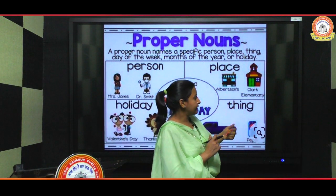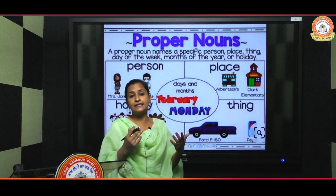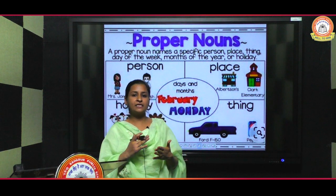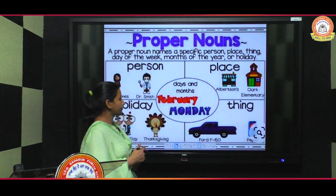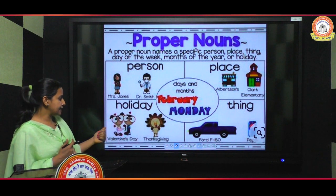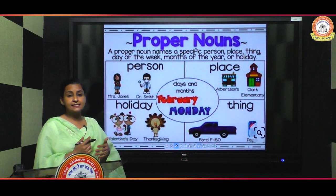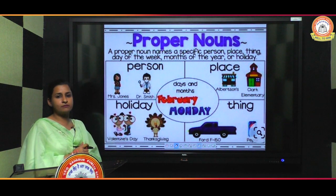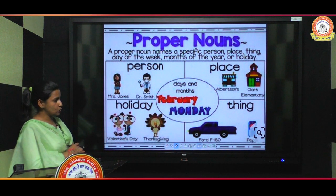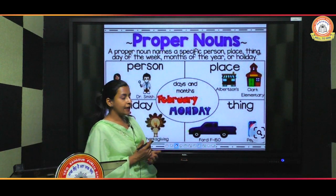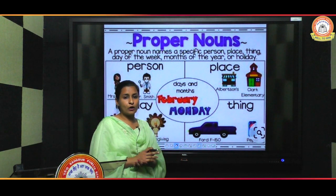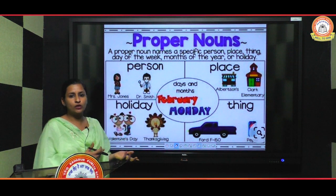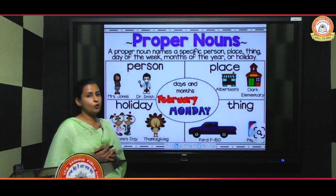For place, we can take examples like Clark Elementary, or city names like Sangrur, Dhuri — these are specific names of a place. For holidays: Valentine's Day, Thanksgiving — these are special days and when called by their specific names, they are proper nouns. Same with things — 'car' becomes a proper noun when we use its specific brand name, like Maruti Suzuki.